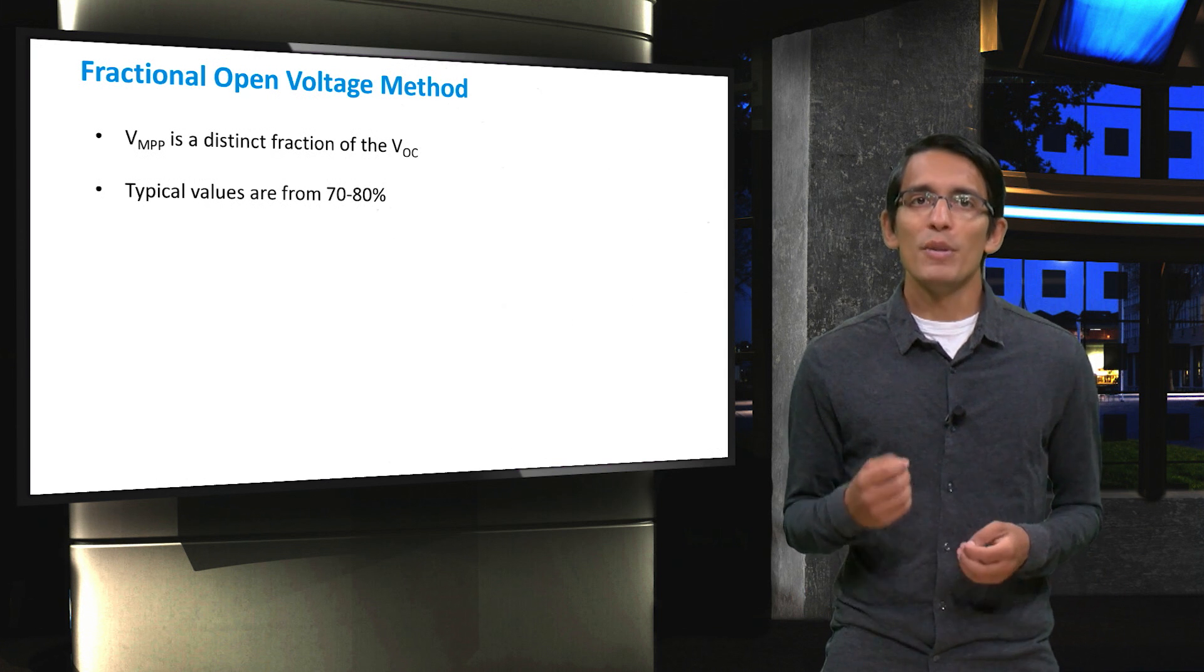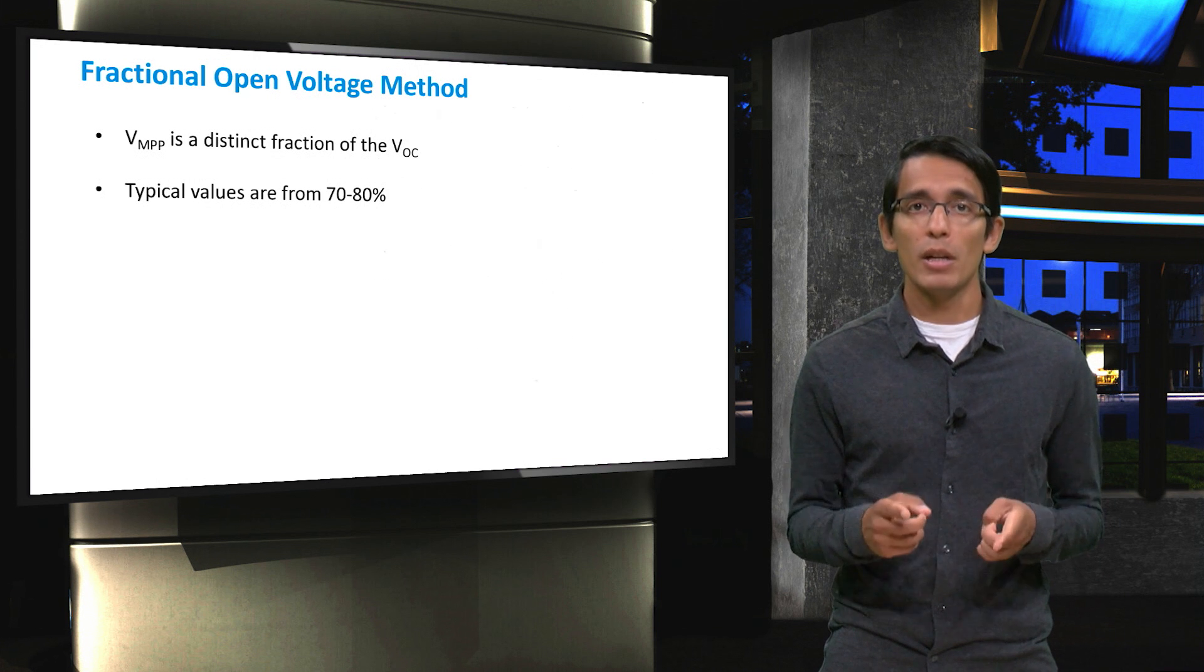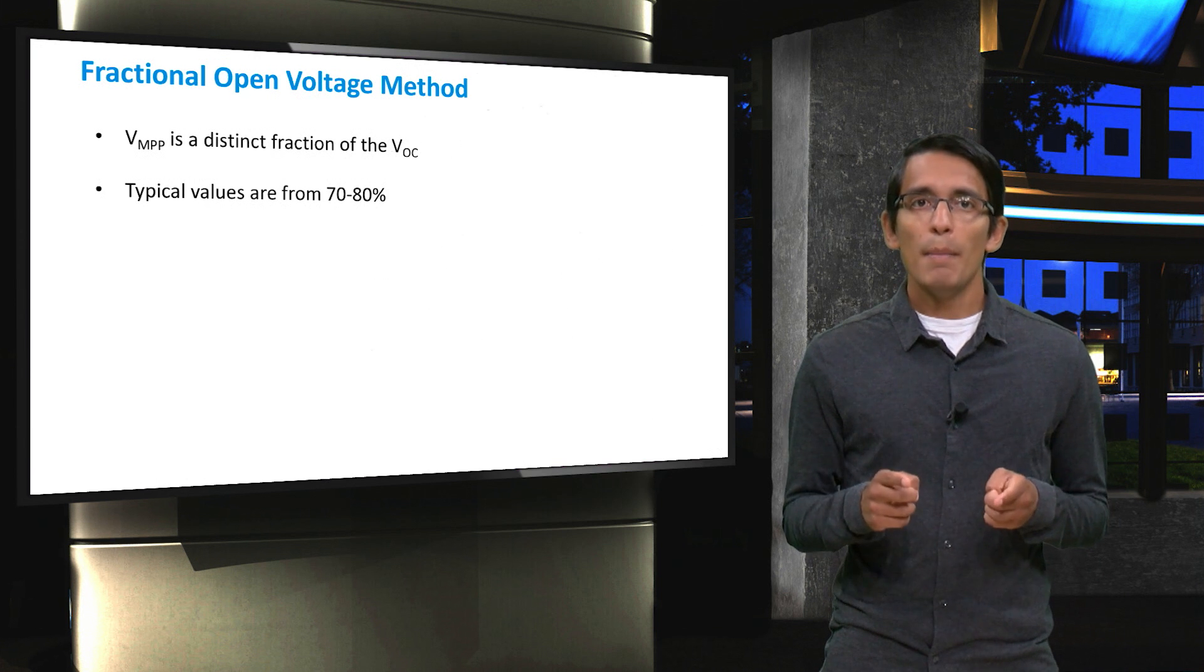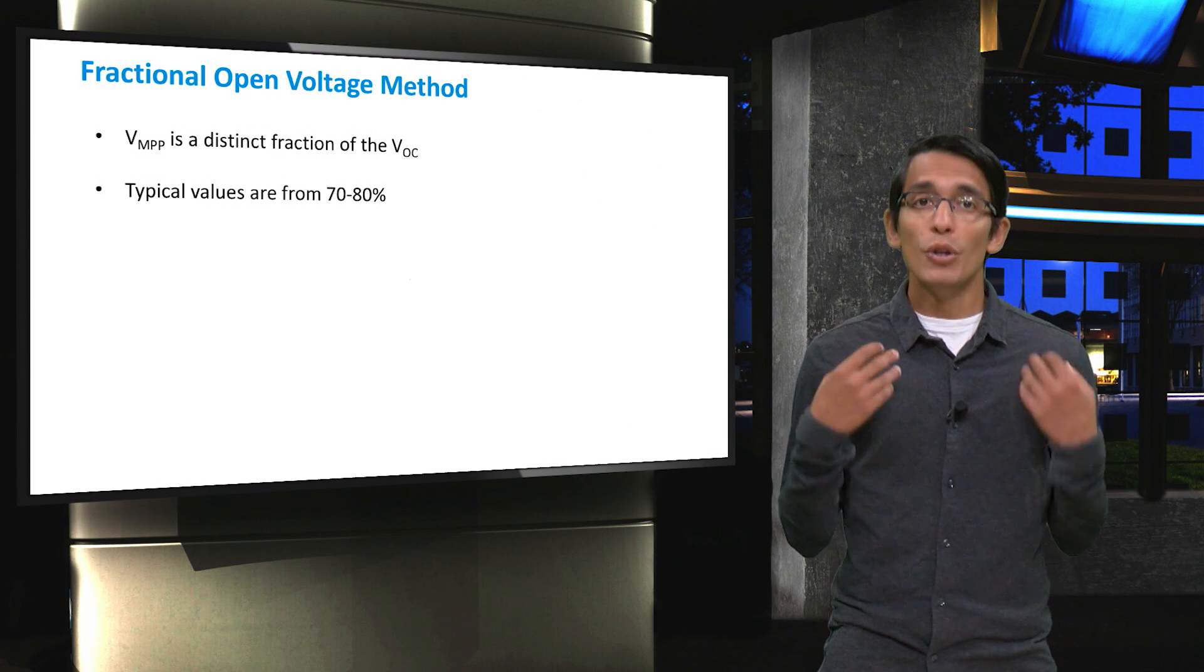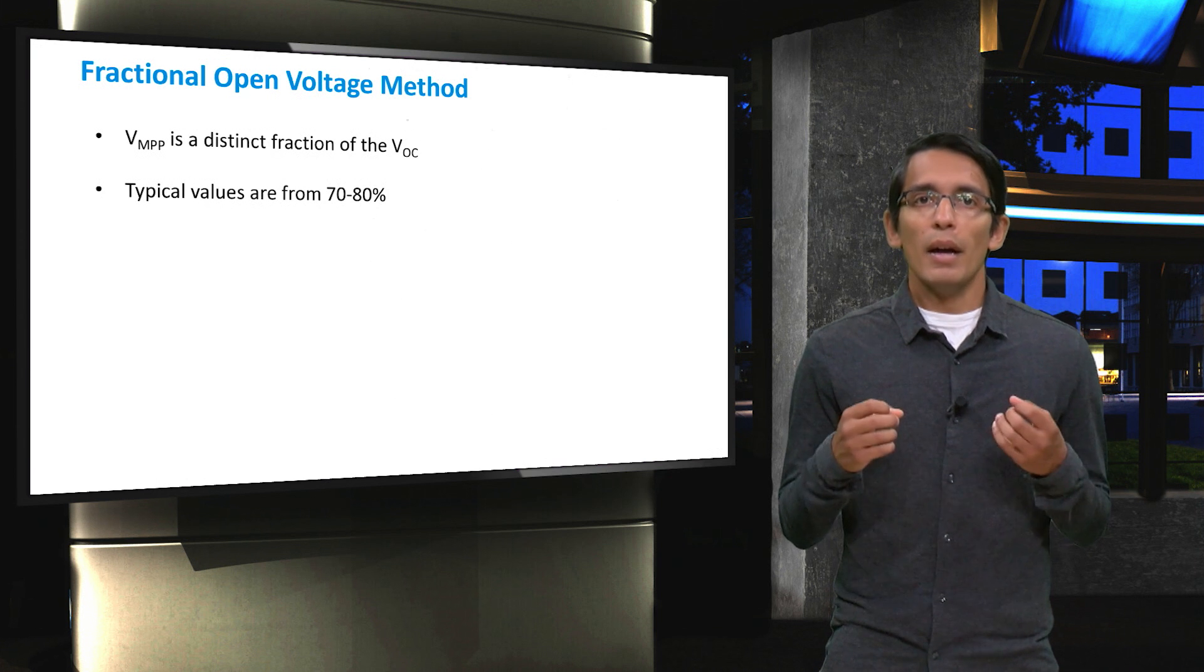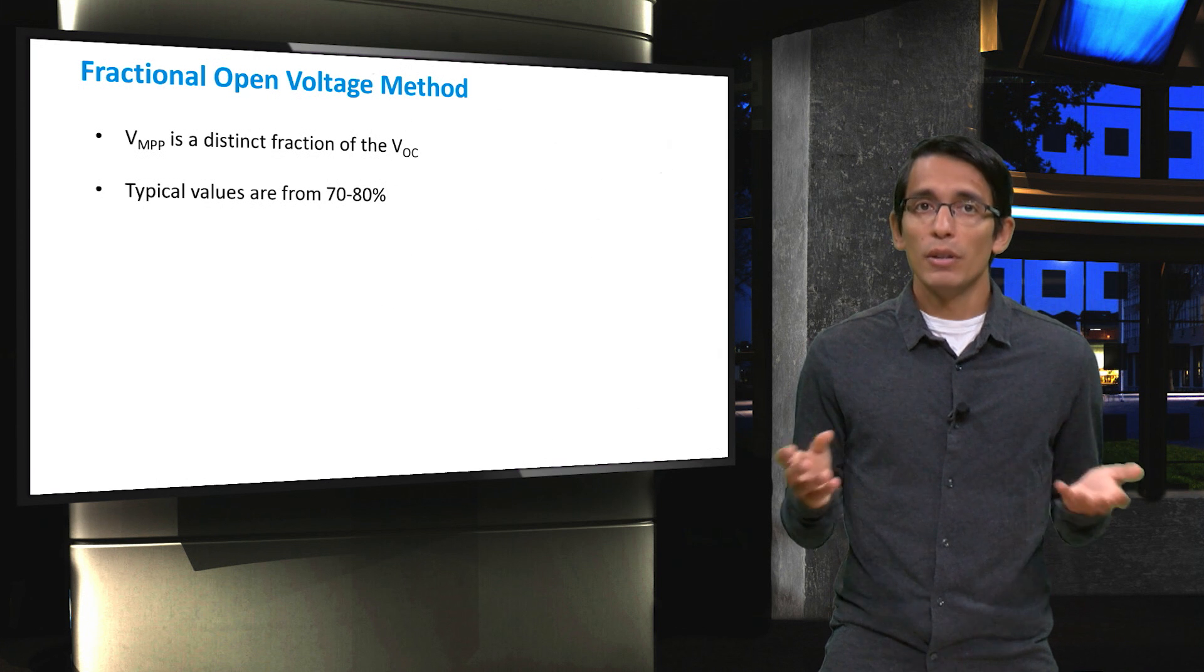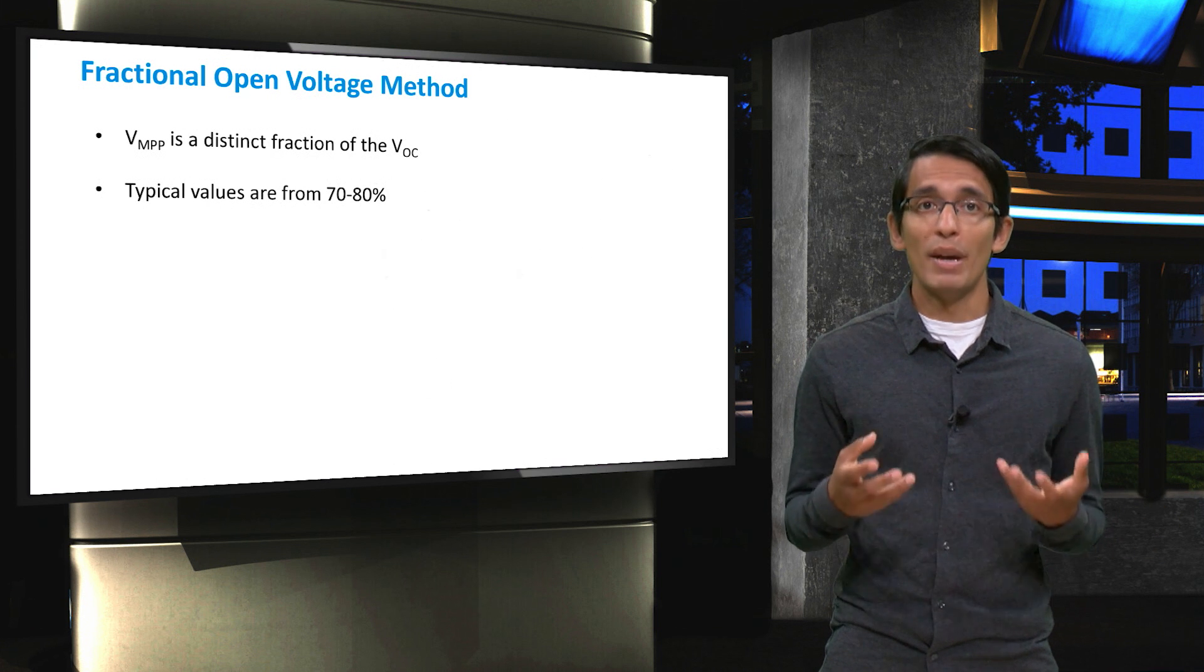However, the open circuit voltage needs to be monitored periodically. This is done by disconnecting the solar panel and measuring the VOC. During these disconnections, no power can be delivered to the load, which is the main drawback to this method.